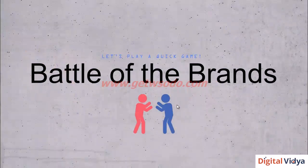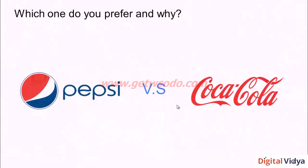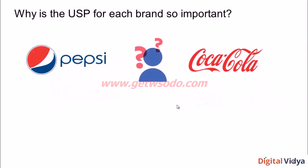To understand why USPs are important, here's a quick activity. I'm going to show you two brands — Pepsi and Coke. Pause the video for a minute and write down which brand you prefer. When somebody asks what soft drink you'd like, what's the first name that comes to mind — Pepsi or Coke? Also write down why you prefer one over the other. Now that you've put this down, let's understand why a brand USP is so important and how it helps influence top-of-mind recall.